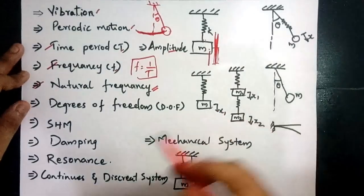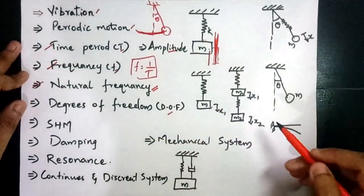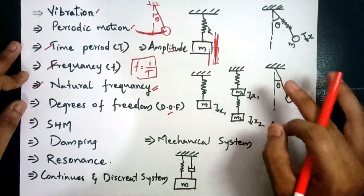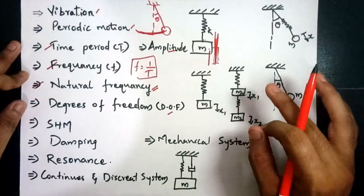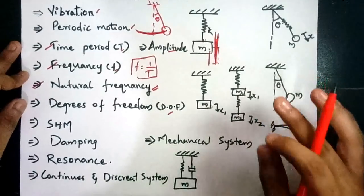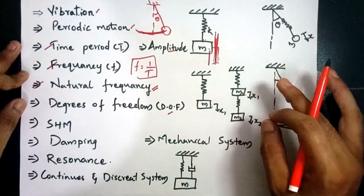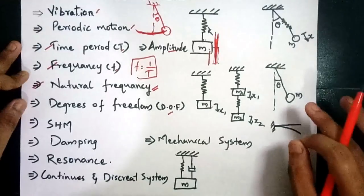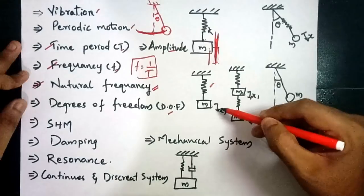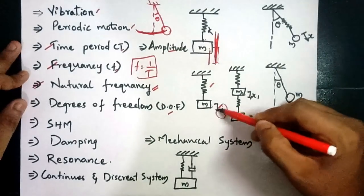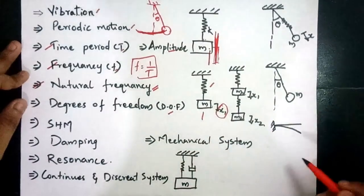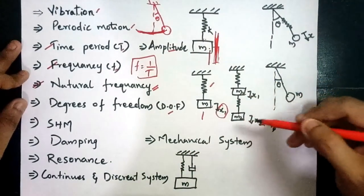The next term is degree of freedom. Degree of freedom means the number of independent coordinates required to specify the motion of a system completely. For a spring-mass system considered here, the number of independent coordinates determines the degrees of freedom.